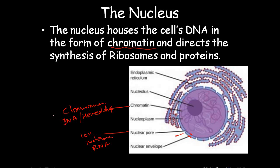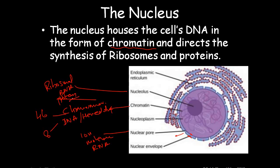In humans we have 46 chromosomes; in fruit flies there are 8 chromosomes — the chromosome number changes with each organism. The nucleolus is a dark structure within the nucleus and is an aggregate of ribosomal RNA and proteins. The outer part of the nucleus is connected to the endoplasmic reticulum. This forms the complete structure of the nucleus within the nuclear envelope.